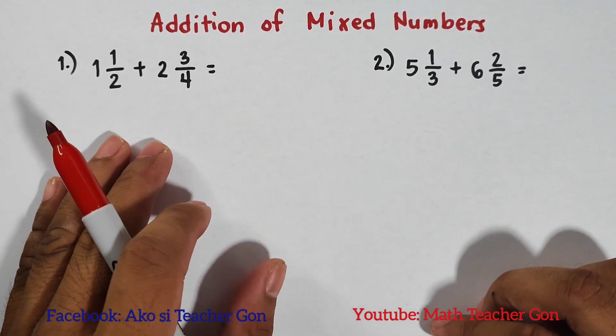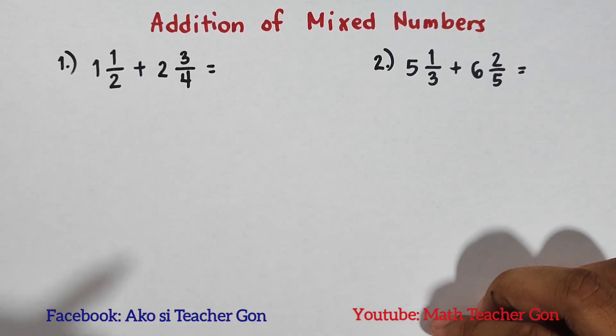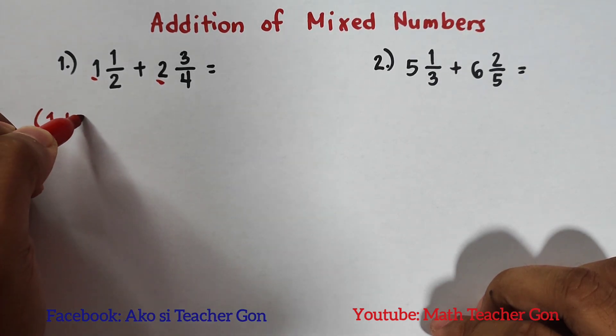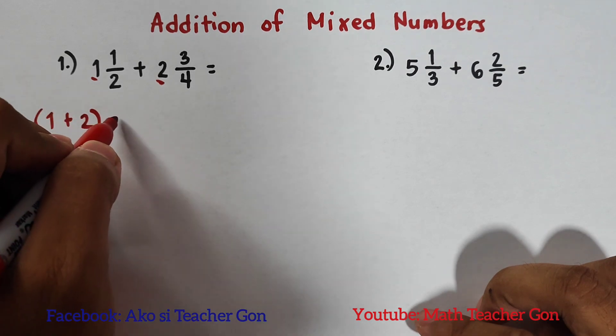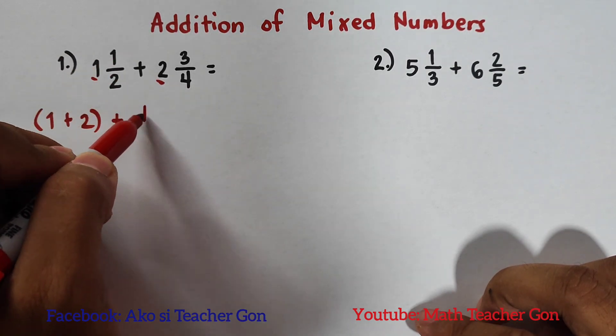So what I need to do here is add the whole numbers and the fractions separately, or I will regroup them. It goes like this: I will go first with the whole numbers. We have (1 + 2), then plus, for the fractions we have ½.